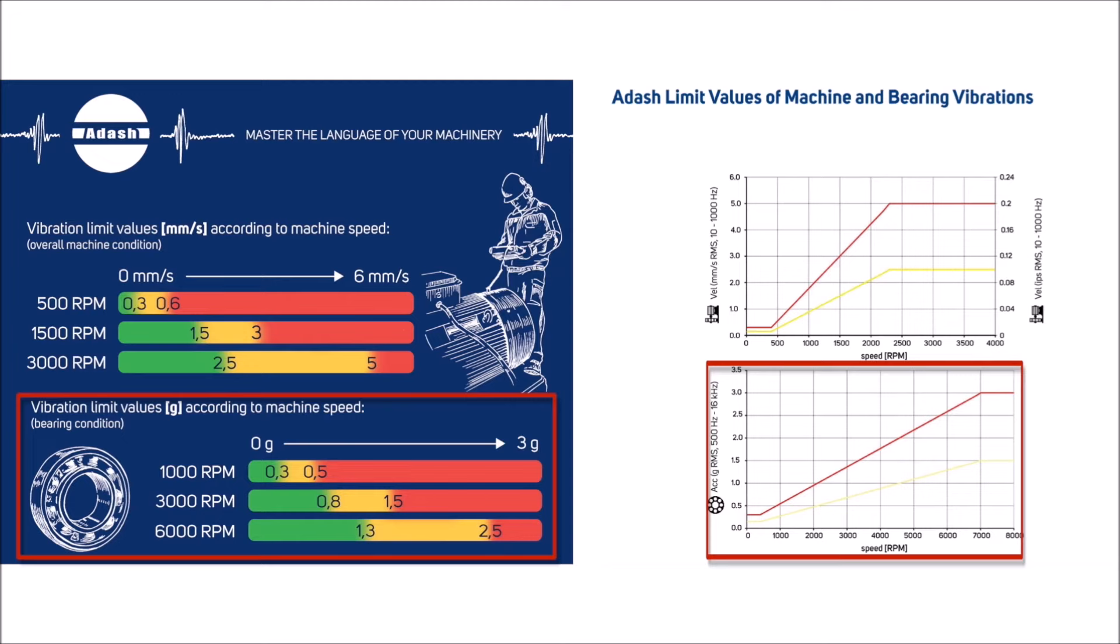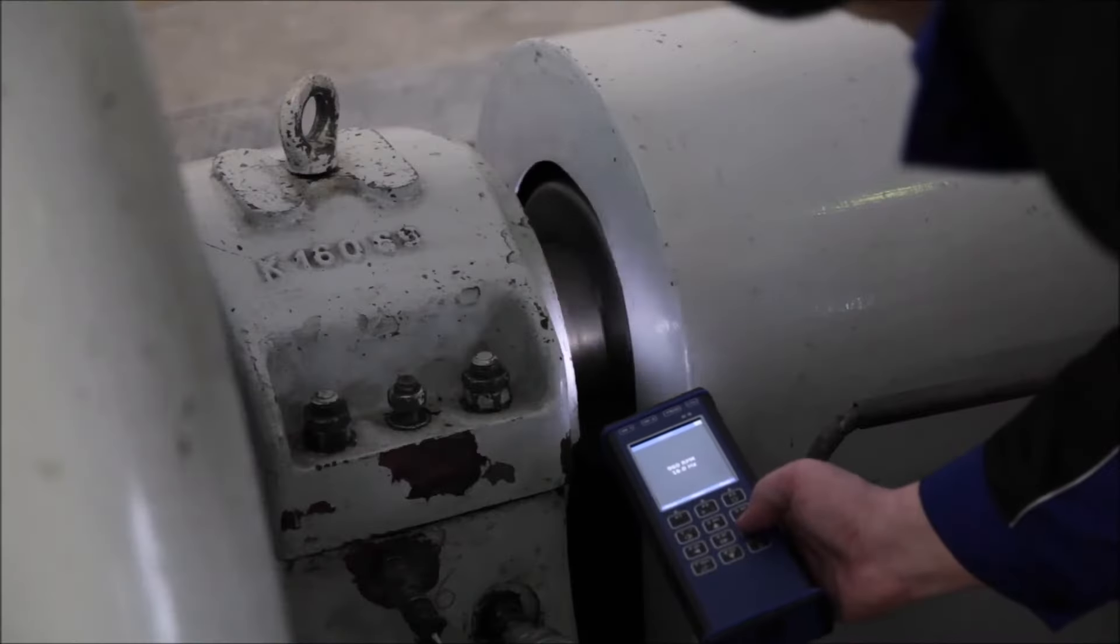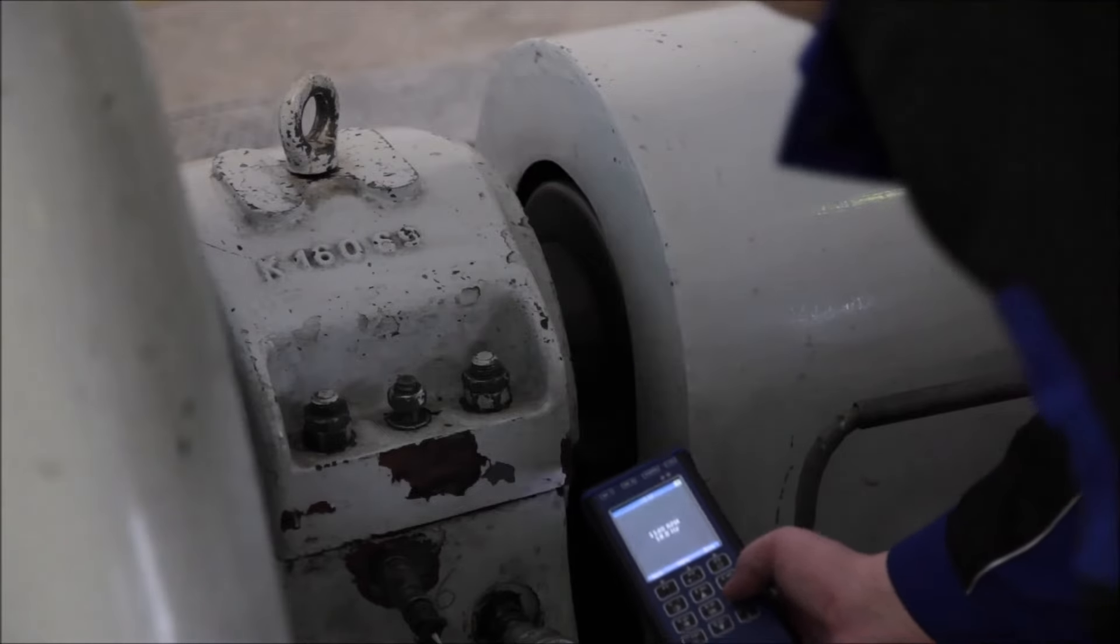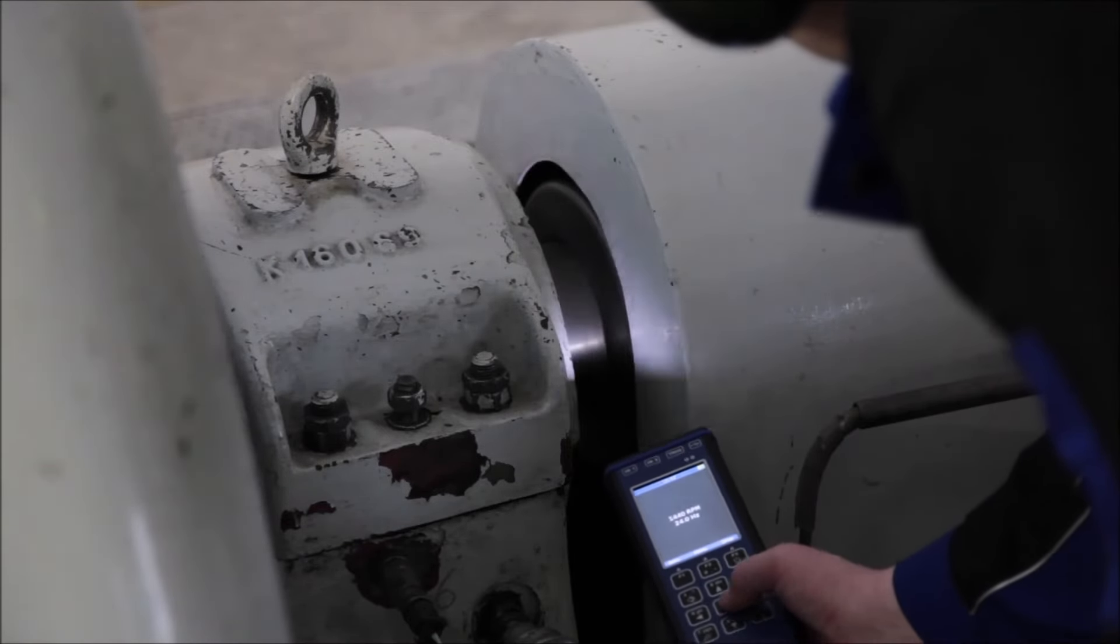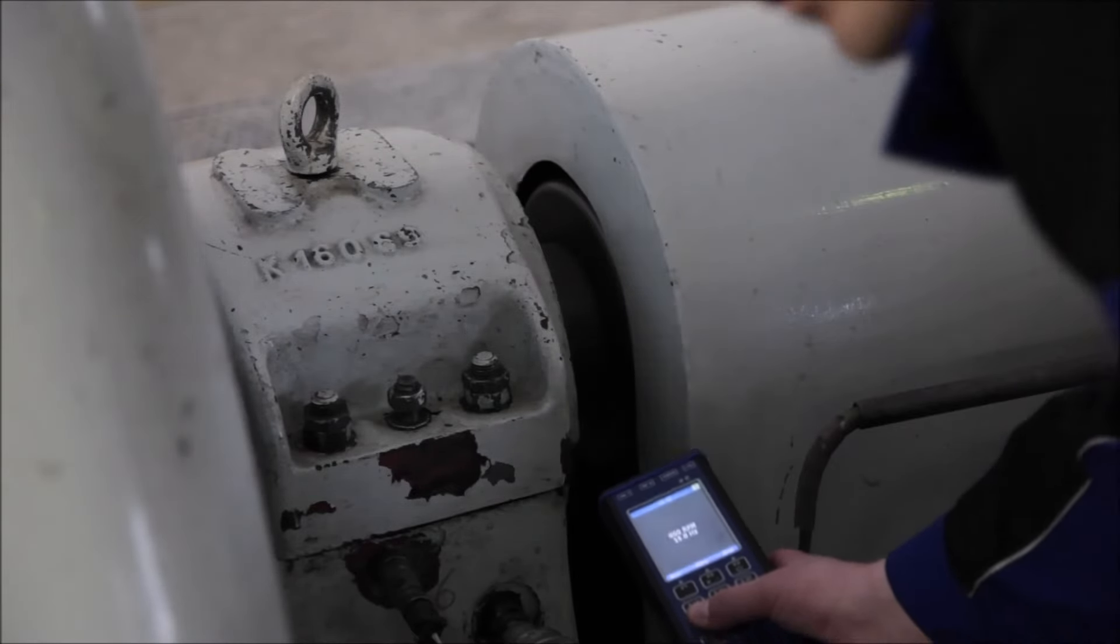Even if we have ADASH bearing vibration limit values, they are just informational. These limit values were created on the basis of more than 30 years of experience of ADASH field engineers. Why do general bearing vibration limits not exist? As you can imagine, there are many thousands of bearing types on the market. Therefore, you cannot define general vibration limits. Also, you have to consider that each bearing on a particular machine runs under a different speed and a different load. Another aspect is how the bearing was installed in the machine.